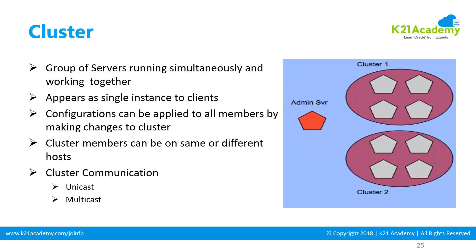In the diagram, you have an admin server on the left-hand side, and you have four servers on top and four on the bottom — cluster one and cluster two. In this domain, you have one admin server and eight managed servers: four managed servers in cluster one and four managed servers in cluster two. The members within a cluster can talk to each other using either unicast or multicast.